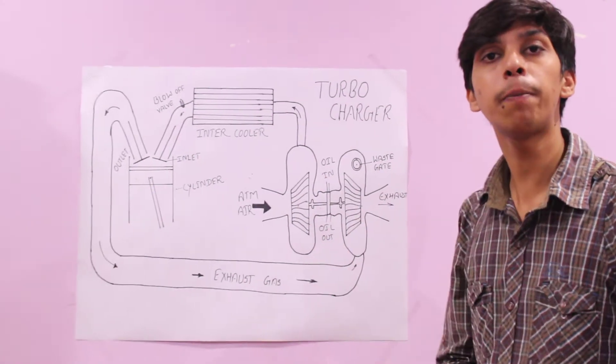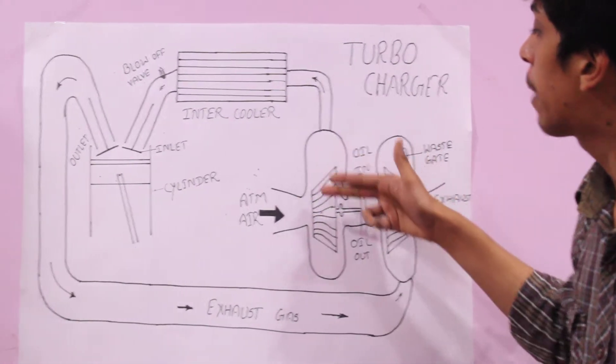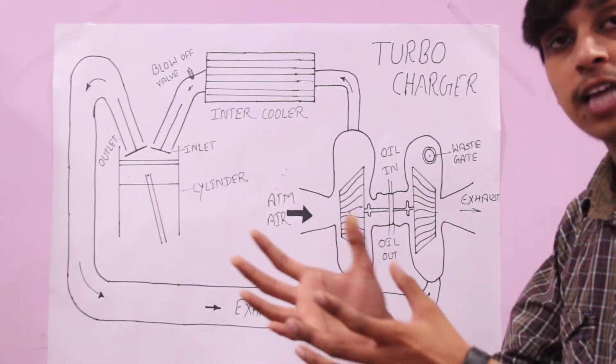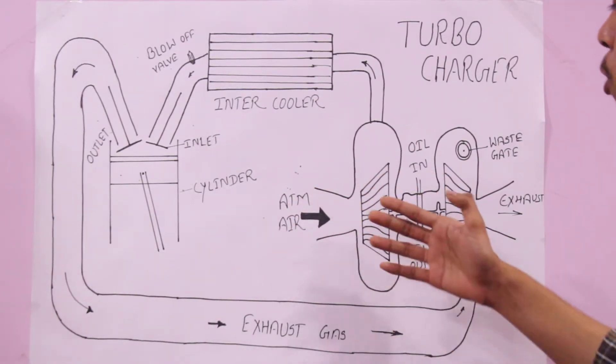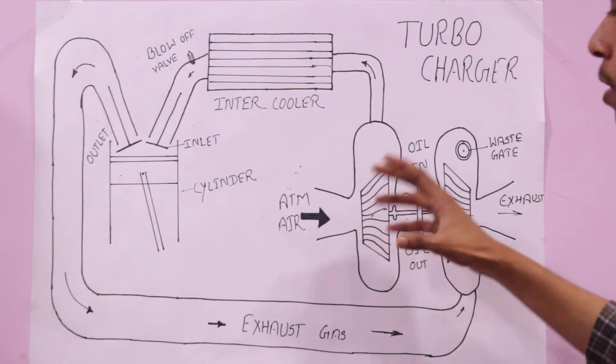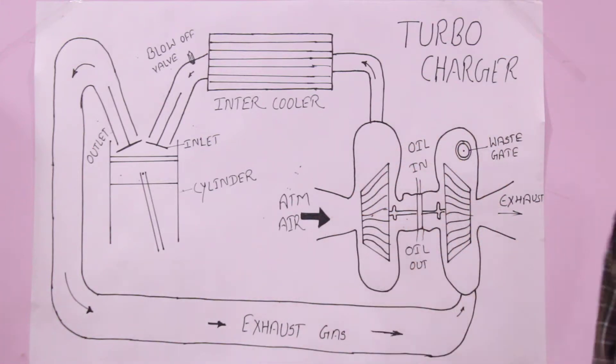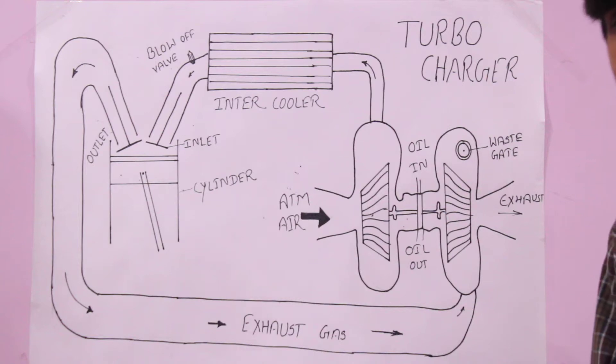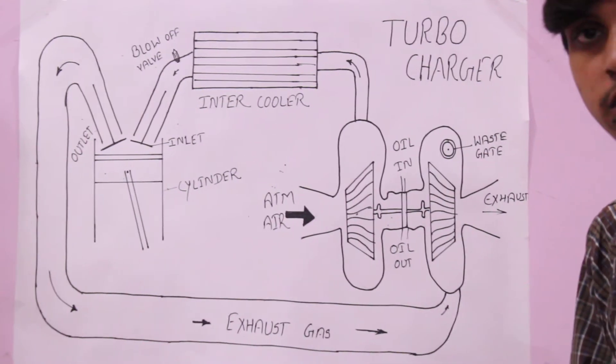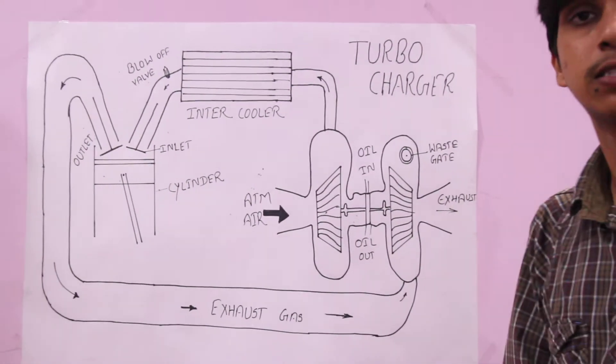In high RPM, when the compressor starts spinning, it sucks a high amount of air from the atmosphere. When it sucks the high amount of air from the atmosphere, then it compresses that air. Pressure increases. So when it increases the pressure, temperature also increases.